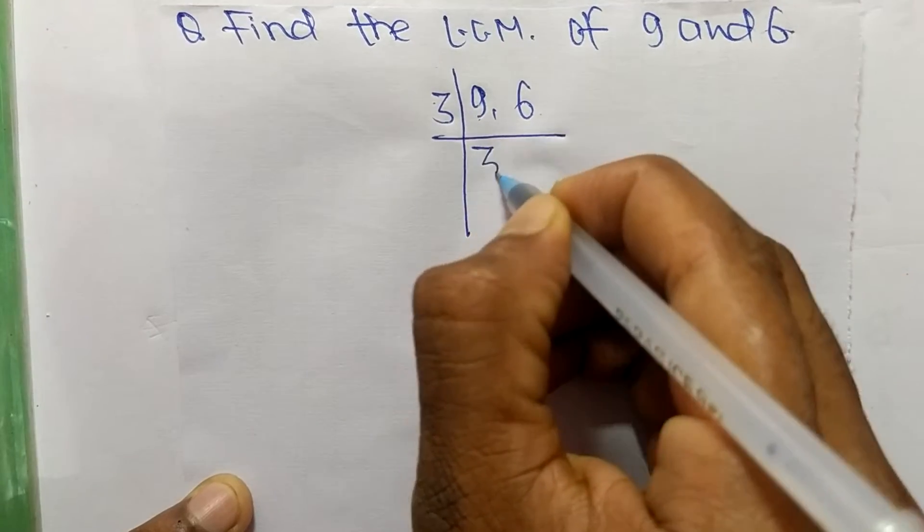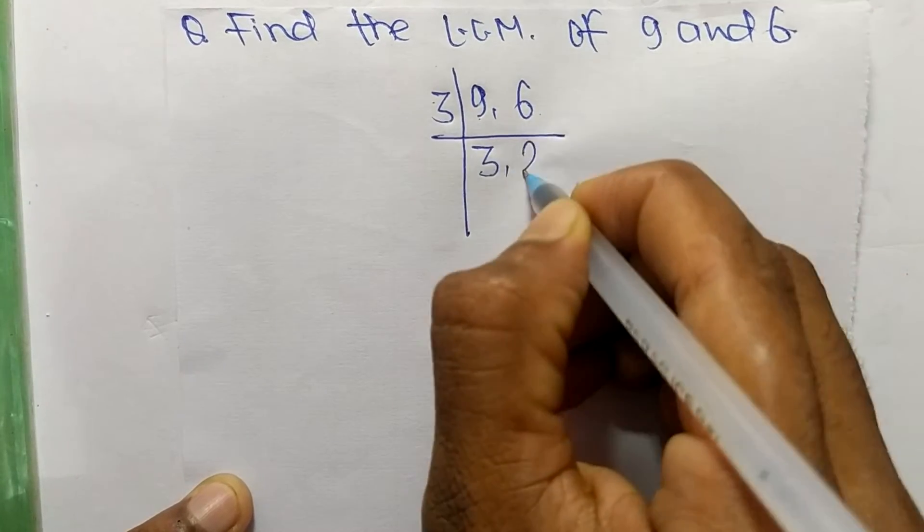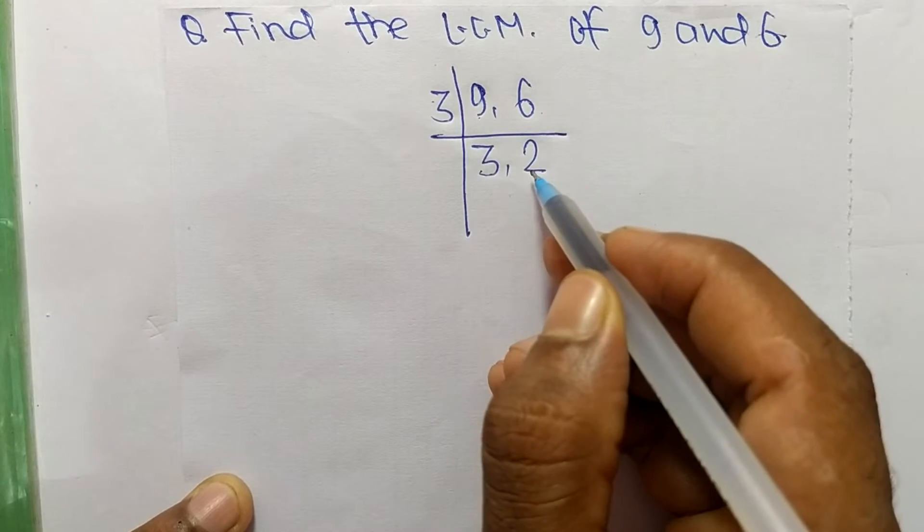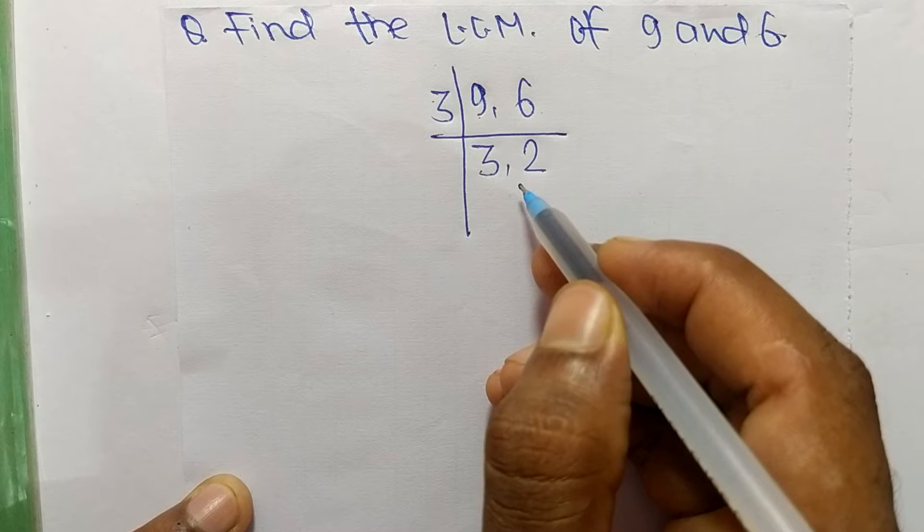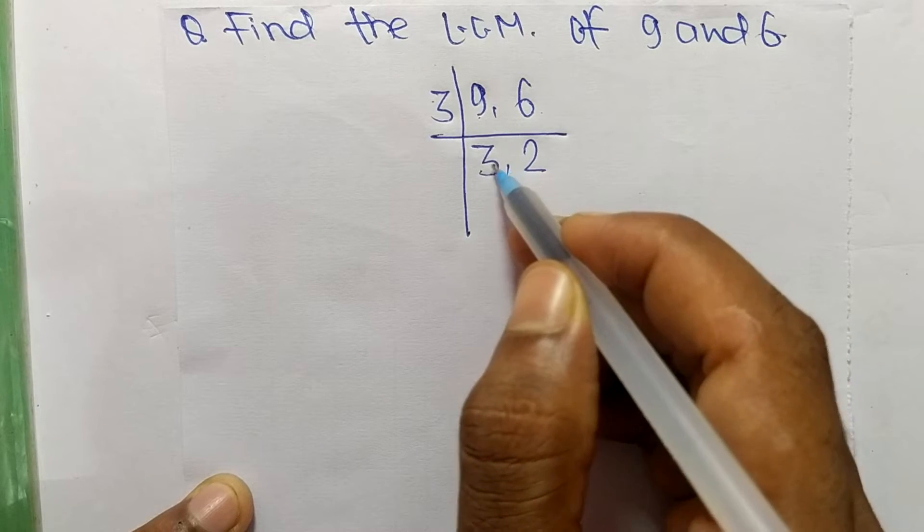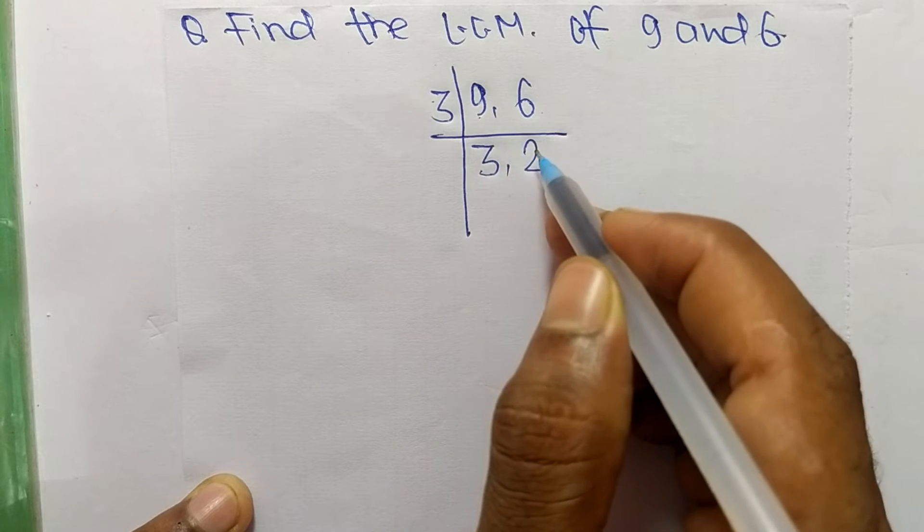3 times 3 equals 9 and 3 times 2 equals 6, so now we get here 3 and 2, which are not exactly divisible by the same number. If we take 3, then it can divide 3 but can't divide 2.